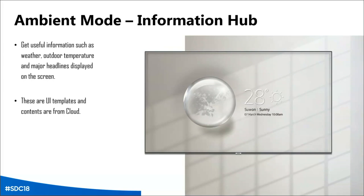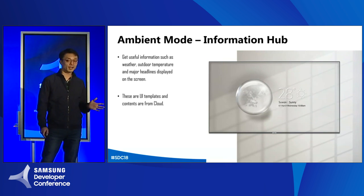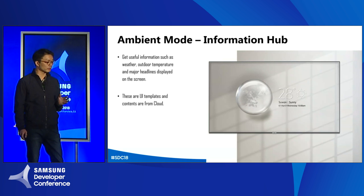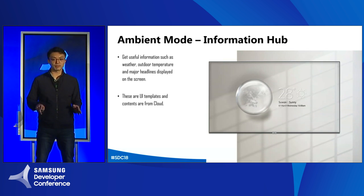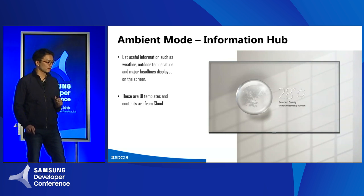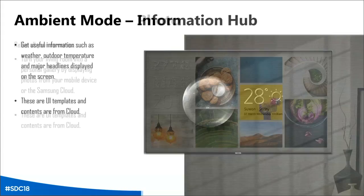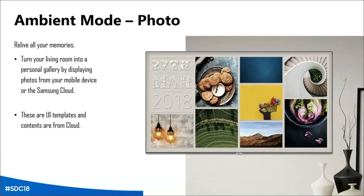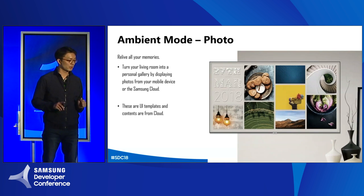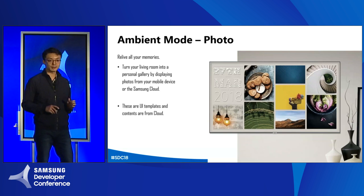Information content provides very useful information such as weather, temperature, or headline news. These consist of a template UI on the TV side — there are just three defined UIs and all the content comes from the cloud. We can also make our living room into a personal gallery with photo content. Photo content comes from our mobile or cloud, and it also consists of a UI template and cloud.